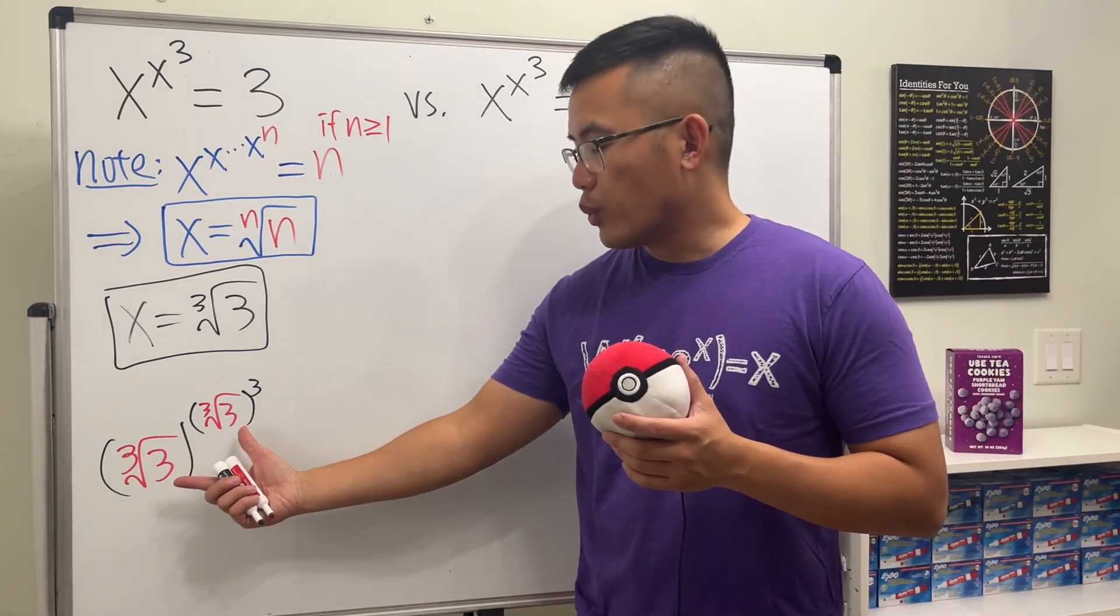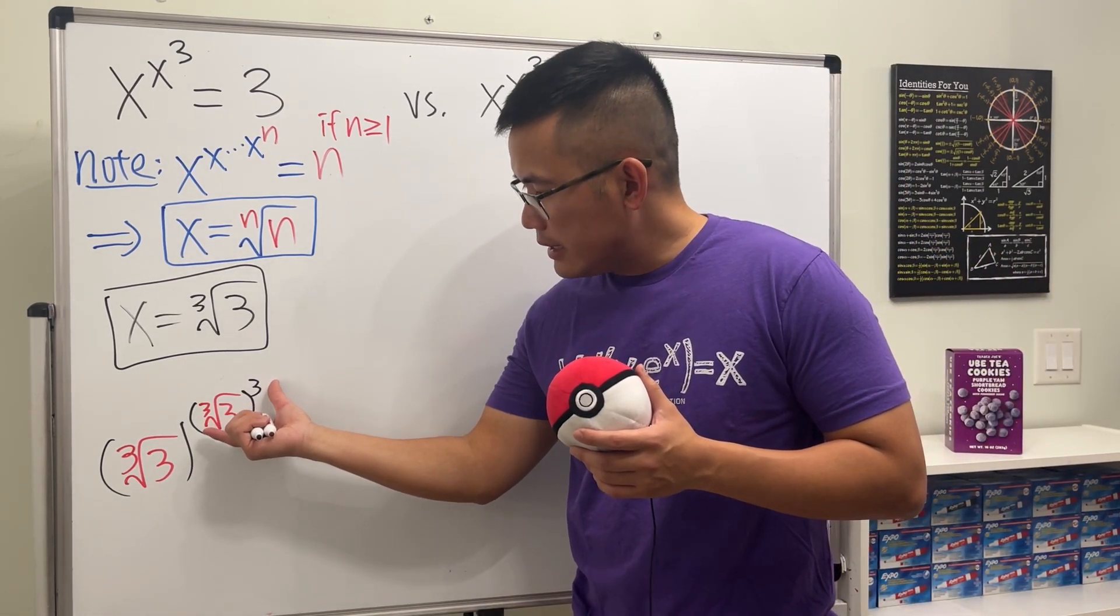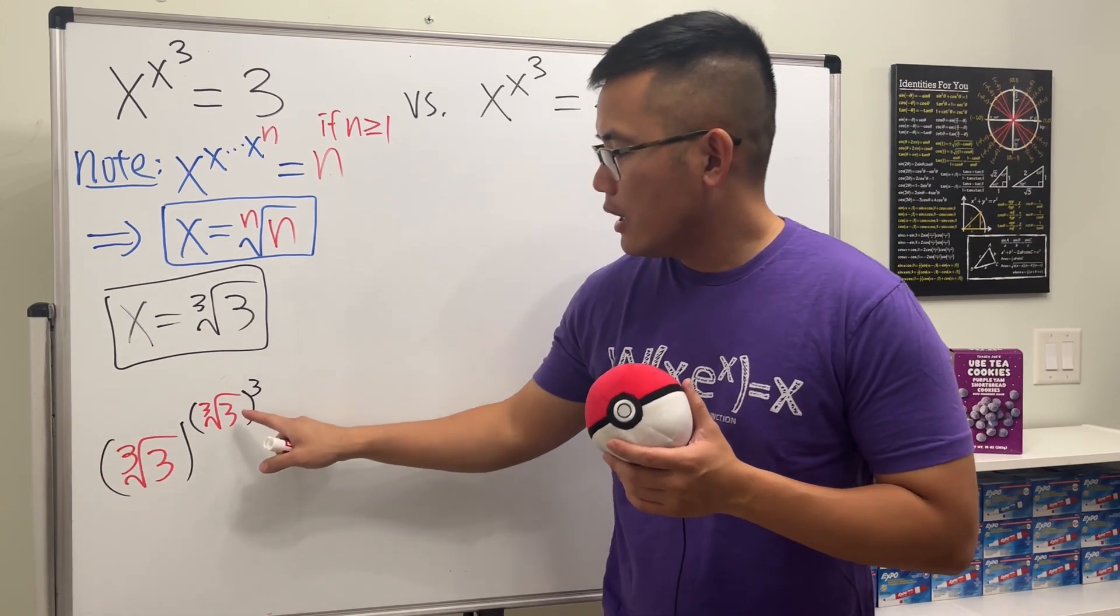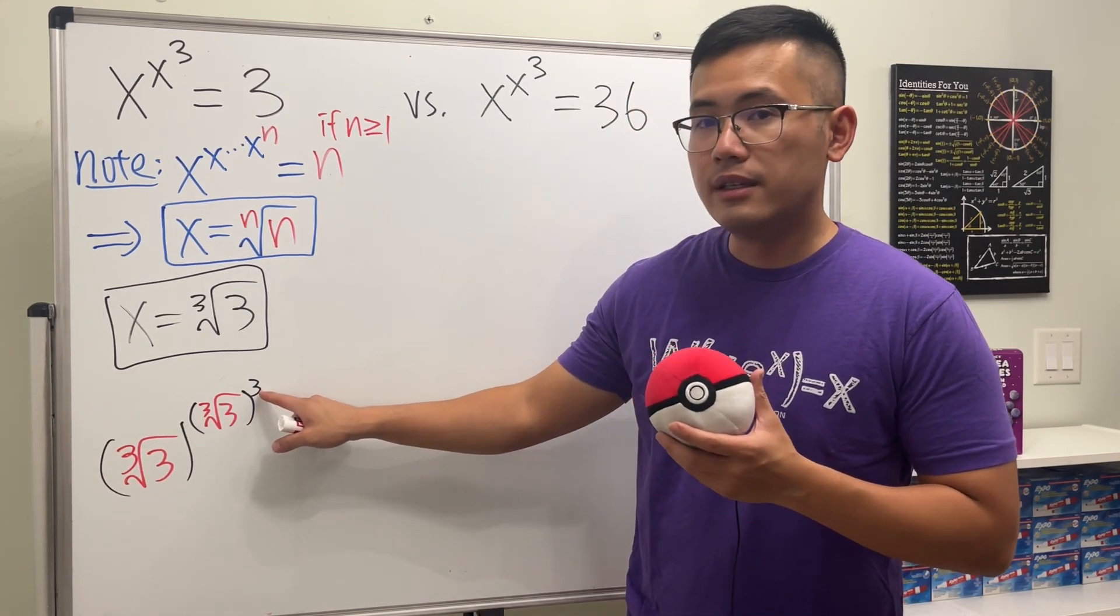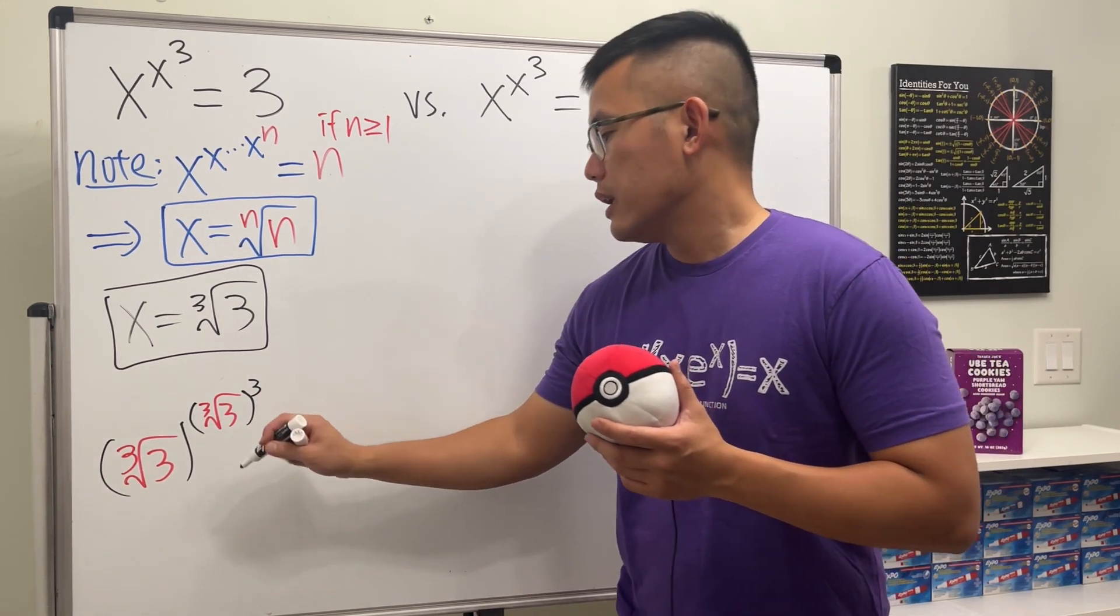I'm going to plug in this into this x and that x and you'll see it works. So here we have the cube root of three, and then raised to the x which is cube root of three, and then this is another power three.